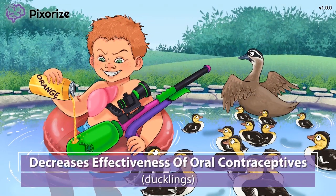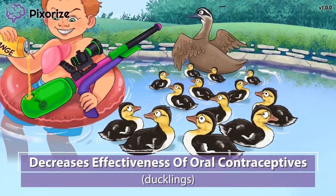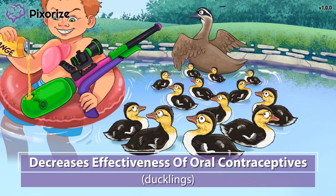These ducklings here better take cover — we don't want them getting hurt in the water fight. It looks like they've noticed the water rifle and are swimming away to safety. There sure are a lot of ducklings here. You can use these ducklings to help you remember that rifampin decreases the effectiveness of oral contraceptives. There is a higher chance the pill won't work, so advise women to use additional contraception while taking rifampin — otherwise, they might end up with a lot of babies, just like all these baby ducks.